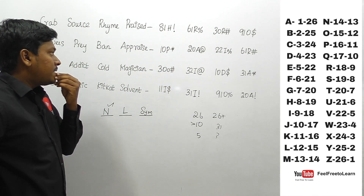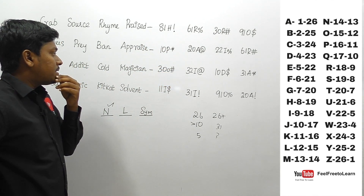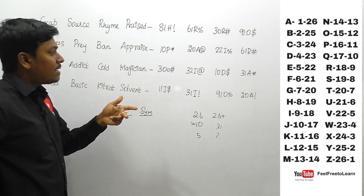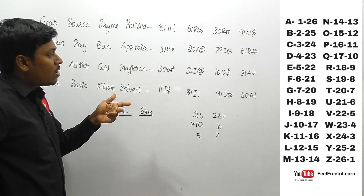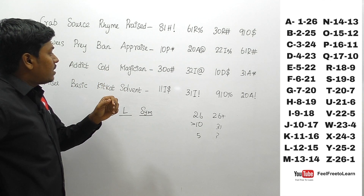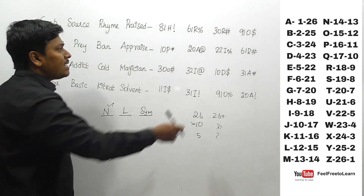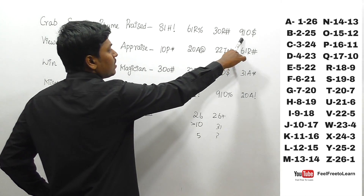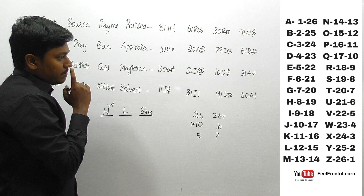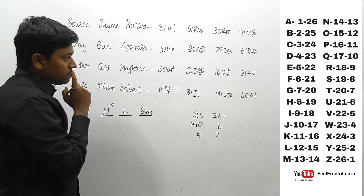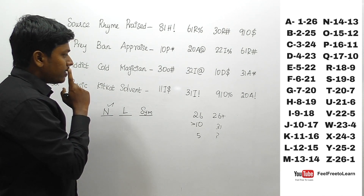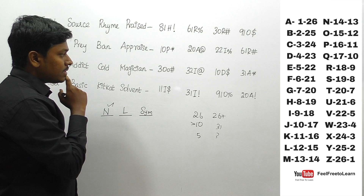Since we have numbers both less than 26 and more than 26, we need to concentrate on both — it should be alphabetical order, or an addition, or multiples of any number. Since 91 is not a multiple of any number, I think we can't find the logic from numbers alone.